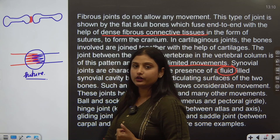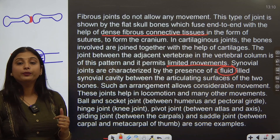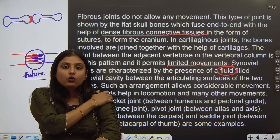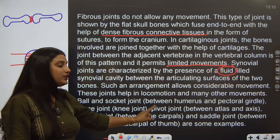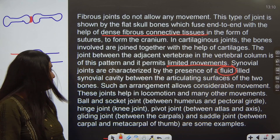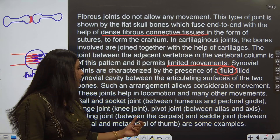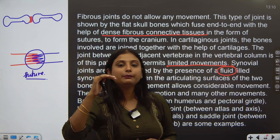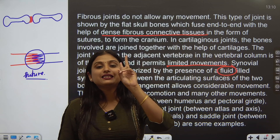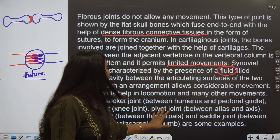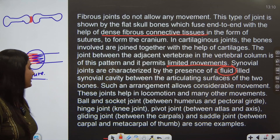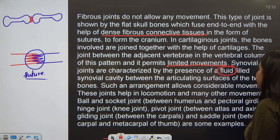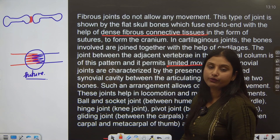These joints help in locomotion and many other movements. For example, the ball and socket joint occurs between the humerus and pectoral girdle — that is our arm bone, the shoulder joint. Then the pivot joint — that's between the vertebrae. Normally between vertebrae there is a cartilaginous joint, but between the first and second vertebrae — that is atlas and axis — a synovial joint is seen. Then gliding joint is between the carpals, and the saddle joint is between the carpal and metacarpal. These are examples of synovial joints.